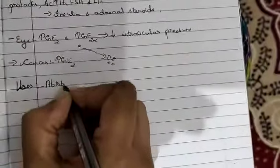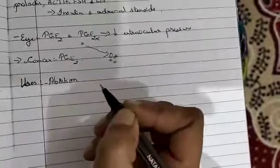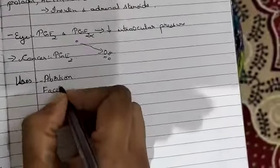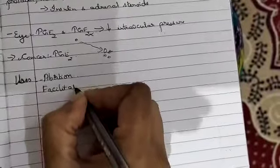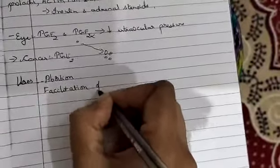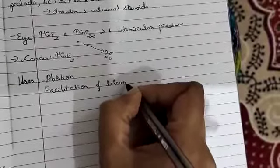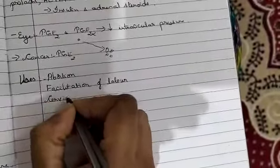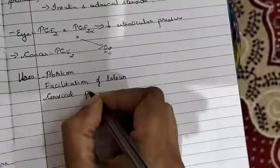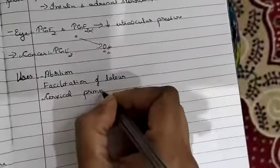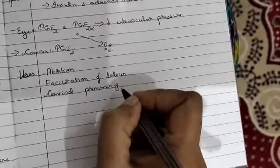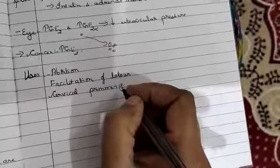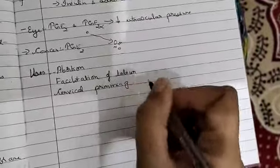It is used in abortion, then it is used in facilitation of labor during delivery, and also cervical priming. Cervical priming is nothing but softening of the cervix before childbirth so that the head of the fetus easily passes out.